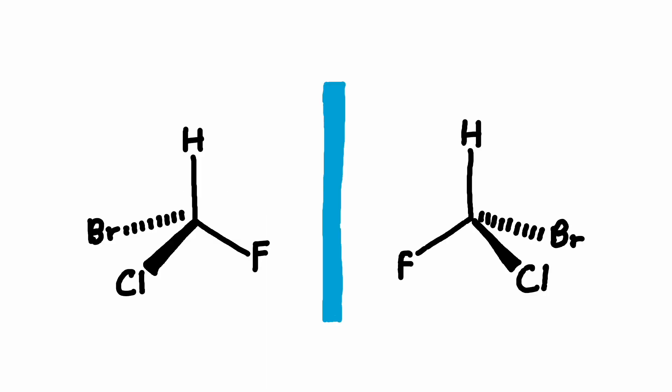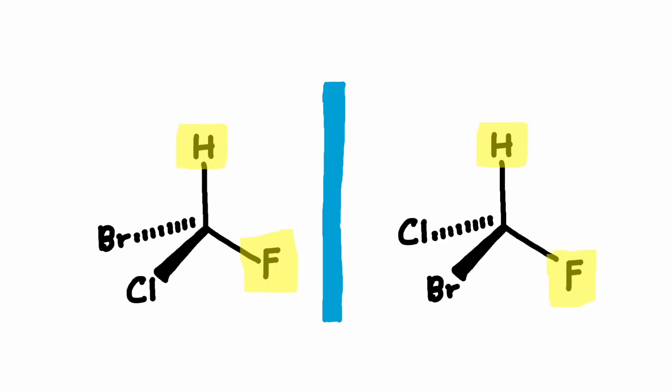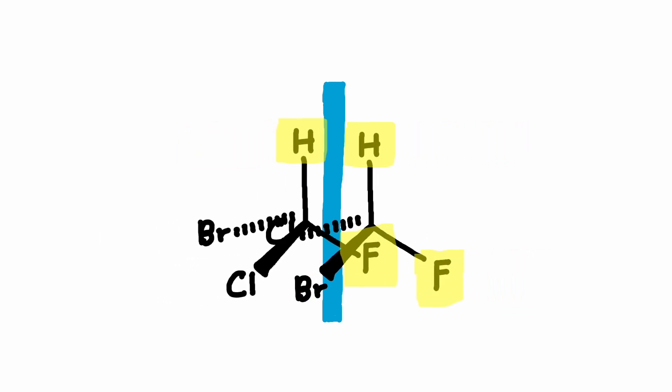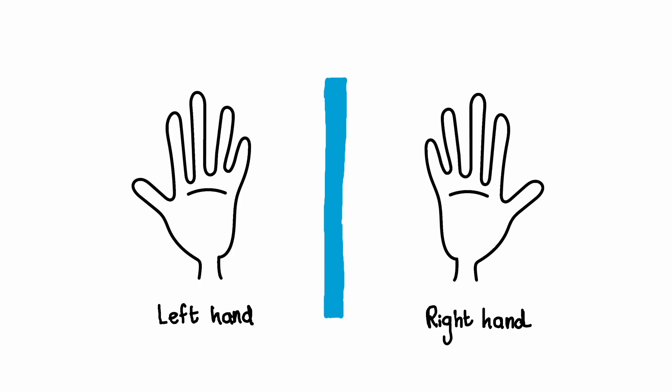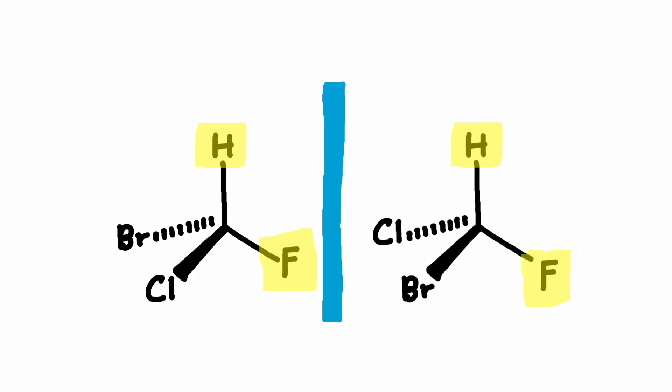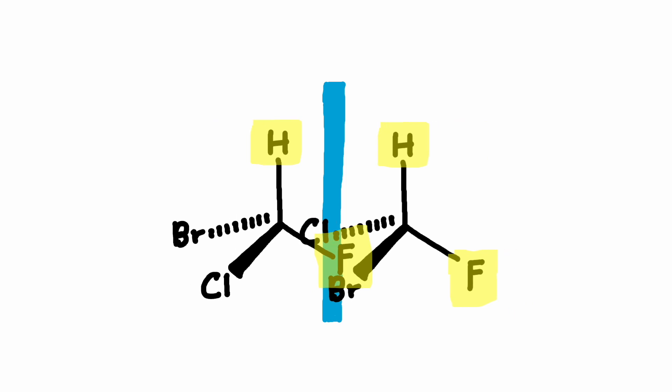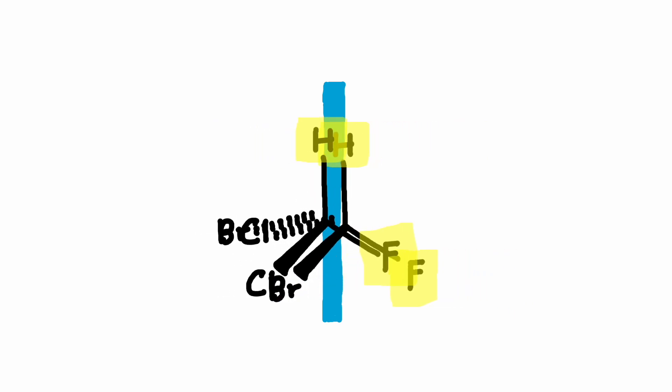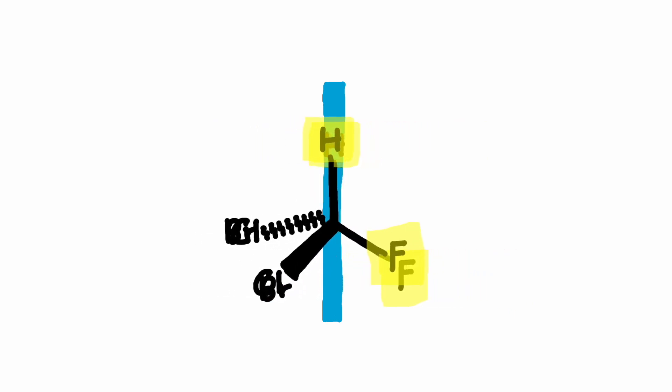Enantiomers are mirror image isomers of each other and cannot be superimposed onto one another. They are like our left hand and our right hand. They're similar in structure but are not superimposable.